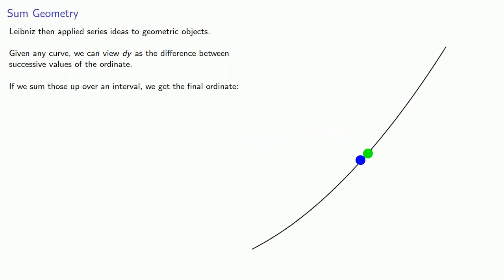And if we sum up these dy values over some interval, we get the final ordinate. So Leibniz wrote this in the following way, where this symbol is a 17th century s, and it's a shorthand for sum.